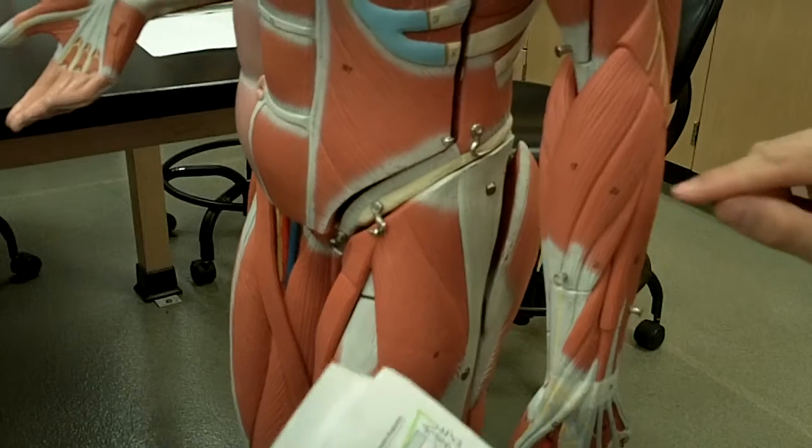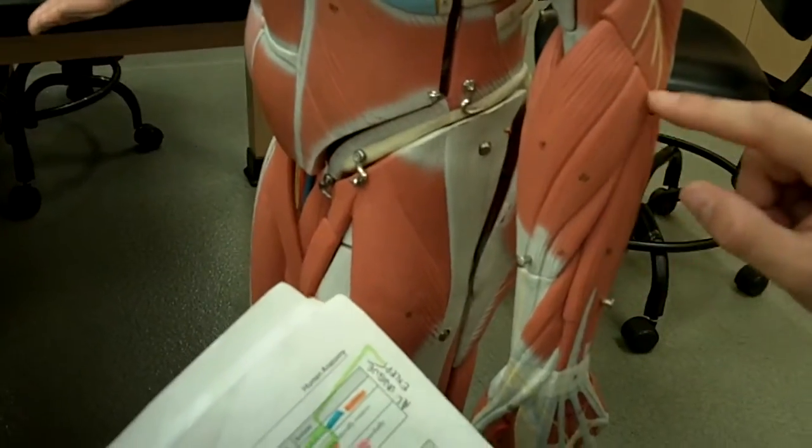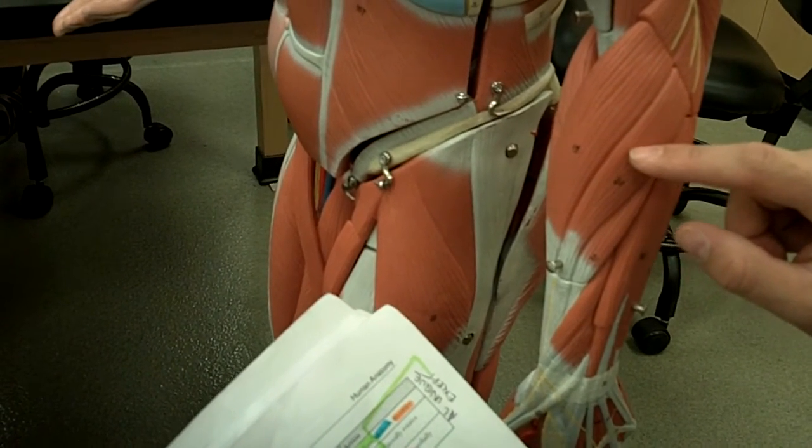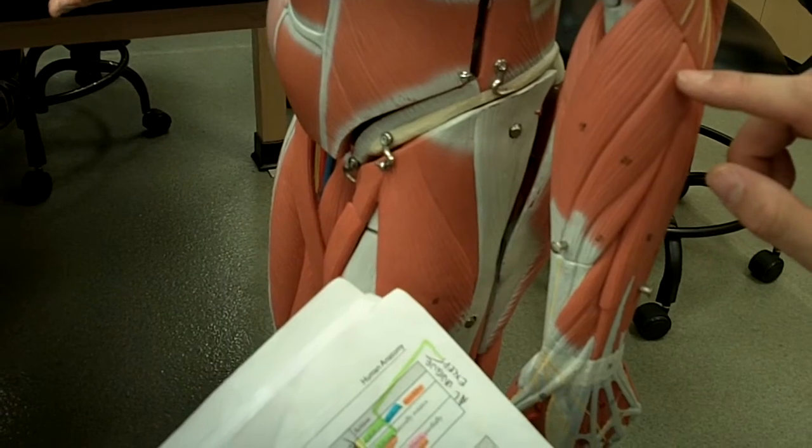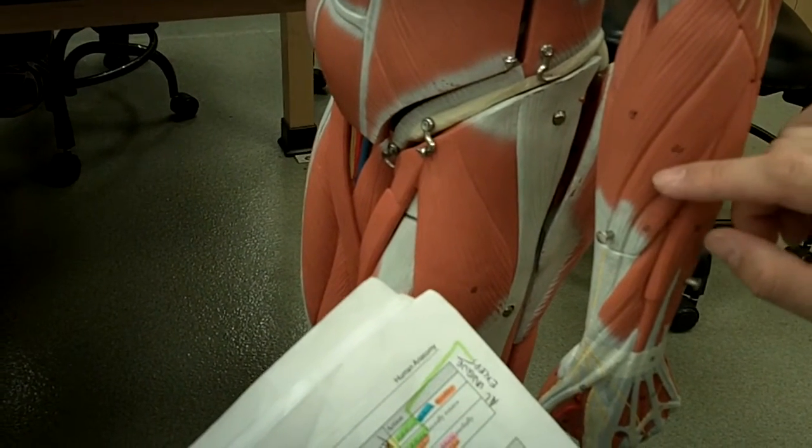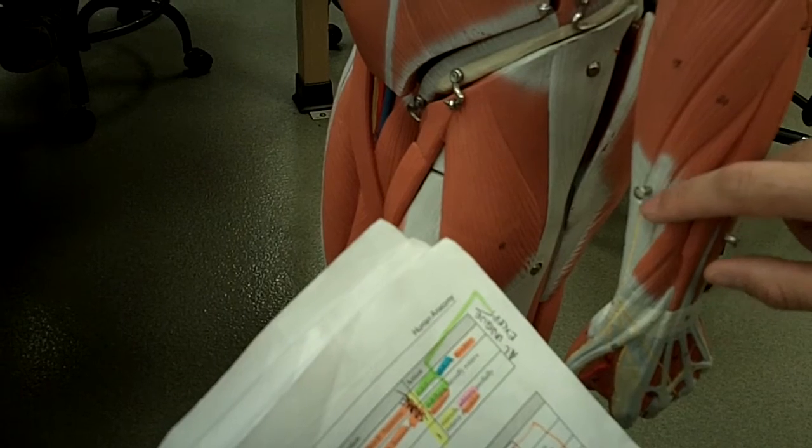The next muscle is the extensor carpi radialis longus, this muscle here. This originates on the lateral supracondylar ridge of the humerus and inserts on the base of metacarpal two. It comes down and inserts down here. Its action extends and abducts the wrist.